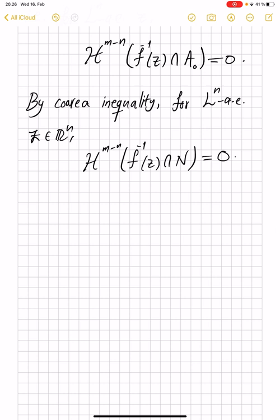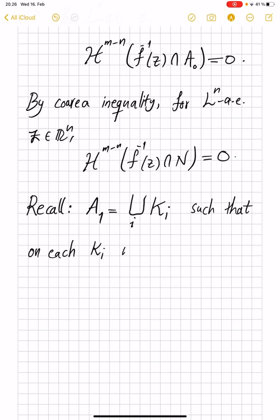And there we have this lemma that the set A1, the regular set, is a countable union of measurable sets, or maybe finitely many of them only, such that on each k_i, we have the implicit function theorem.